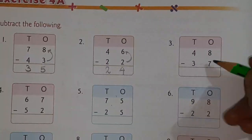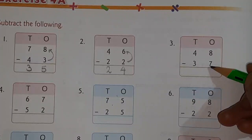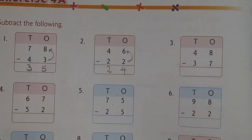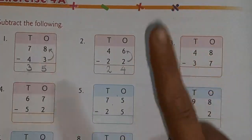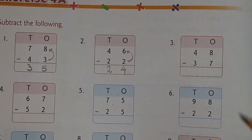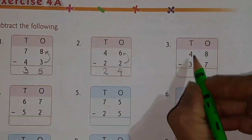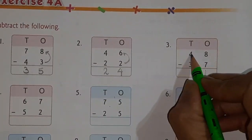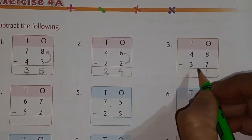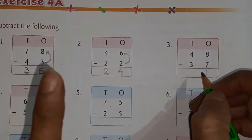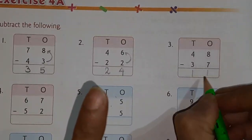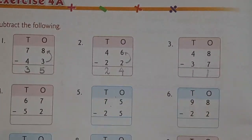Next one: 8 minus 7 in the ones column. After 7 comes 8, so only 1 finger. Then 4 minus 3 in the tens column: after 3 comes 4, so 1. Your answer is 11.